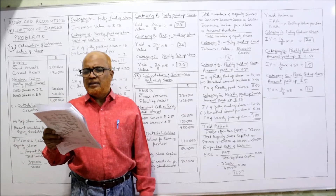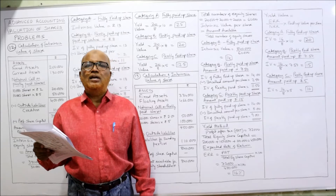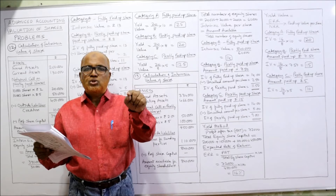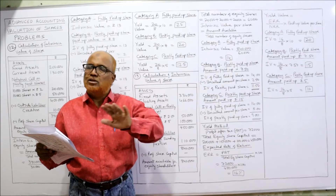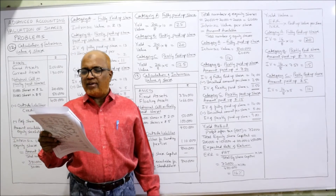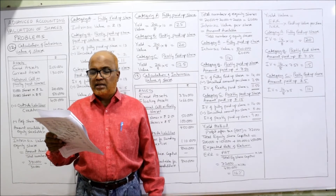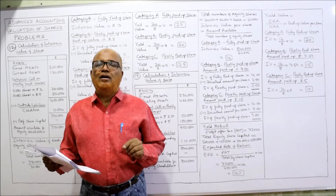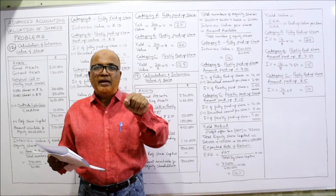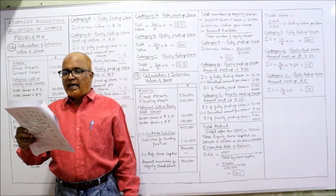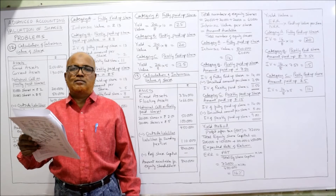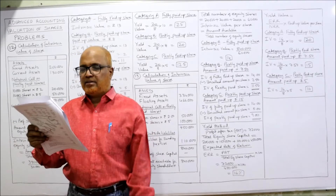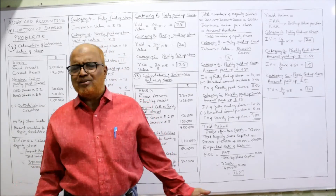General reserve is noted; liability for sundry parties is the outside liability. Fixed assets (less depreciation) and floating assets (current assets) are given. Preliminary expenses and commission on issue of shares are fictitious assets — do not consider them. Normal average profit after tax is estimated at 72,000 and the expected rate of capitalization (NRR) is 8%. Assets and liabilities are required for intrinsic value; profit and NRR are required for the yield method.